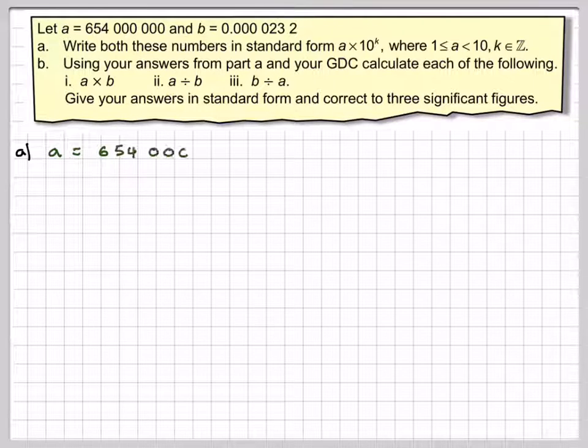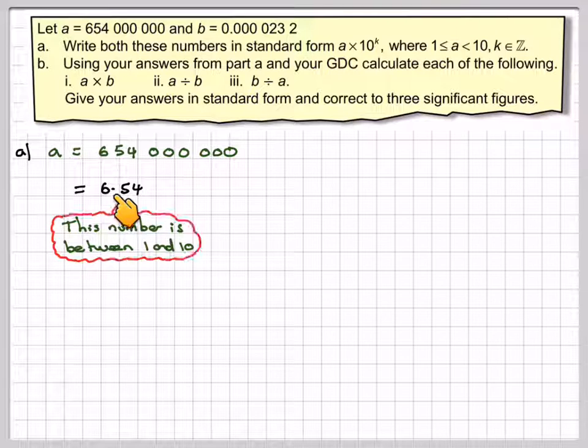So in the first case, we've got A is 654,000,000. First of all, we try to make 654 just a number between 1 and 10. So that would be 6.54. Then we need to figure out how many times did I have to move the decimal point in order to get to 6.54. So that's times 10 to the 1, 2, 3, 4, 5, 6, 7, 8. So this will be 6.54 times 10 to the 8.